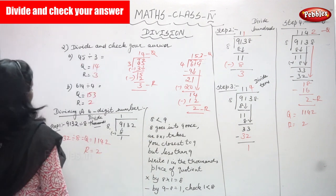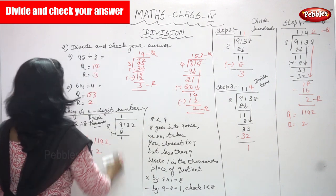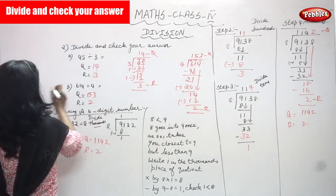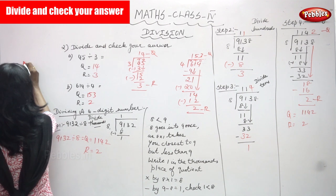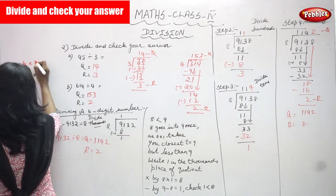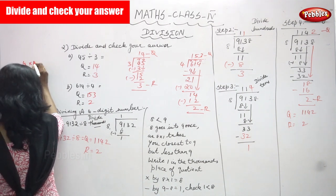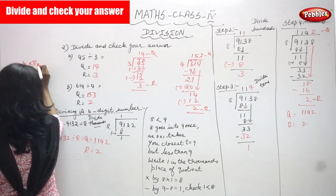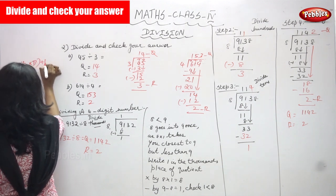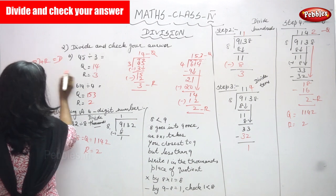Checking your answer is very important. The check formula is: quotient multiplied by divisor, in brackets, plus remainder — you can get the dividend.